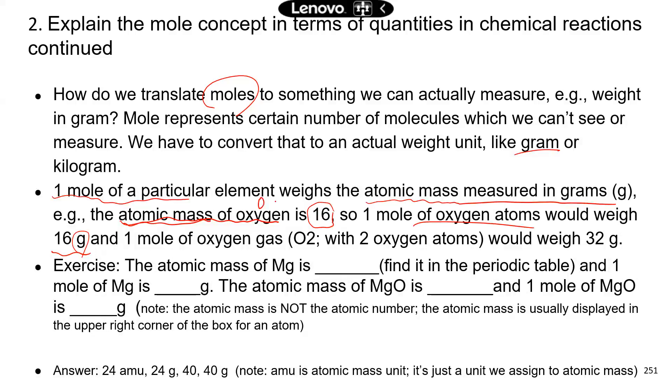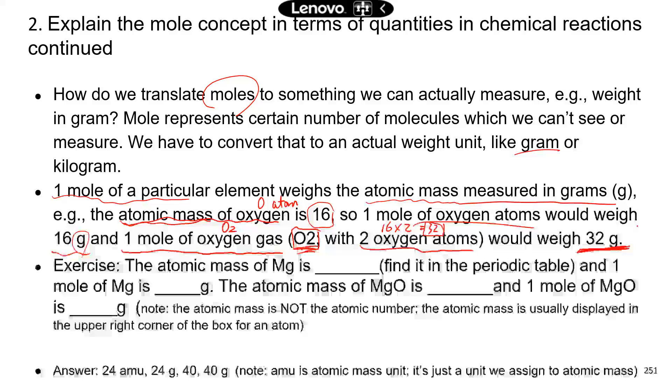Now that's oxygen atom, right? One oxygen atom. Now how about we look at oxygen gas? Now oxygen gas has two oxygen atoms, right? So what would be the actual weight for one mole of oxygen gas? Now it has two oxygen atoms in that molecule, right? So the atomic weight for oxygen gas should be 16 times 2, which is 32. That's the chemical formula for oxygen gas. There are two oxygen atoms. So the total atomic weight for oxygen gas is the weight of two oxygen atoms, right? Which is 32. So one mole of oxygen gas is going to be 32 grams.